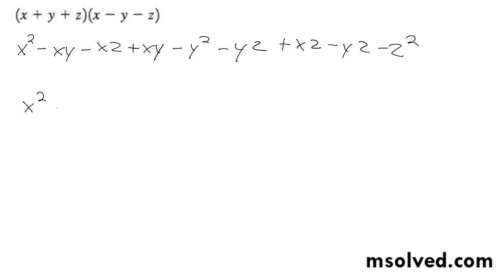So I get my x squared and my xy, so this cancels out. And my xz, those cancel out. So I get 2 minus yz, so I get x squared minus y squared minus z squared.